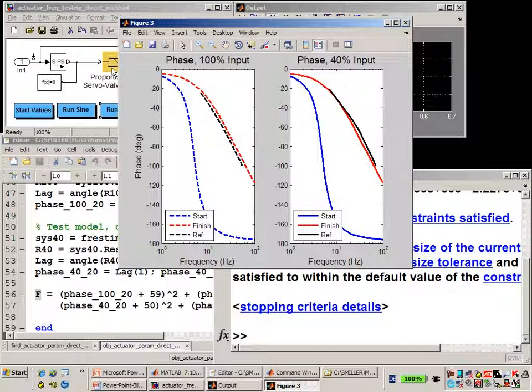But we can see that even in this short period of time, with this optimization that we've set up, simply checking two points on each curve, we've managed to improve the frequency response much more over the original values that we had. And we were also taking both of the frequency responses into account at the same time.